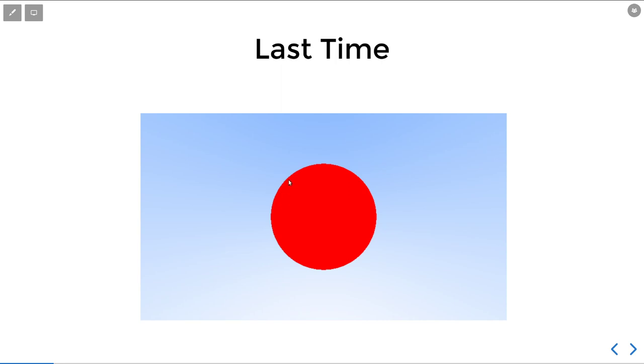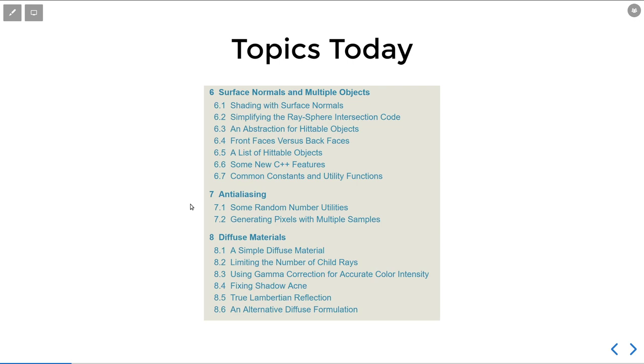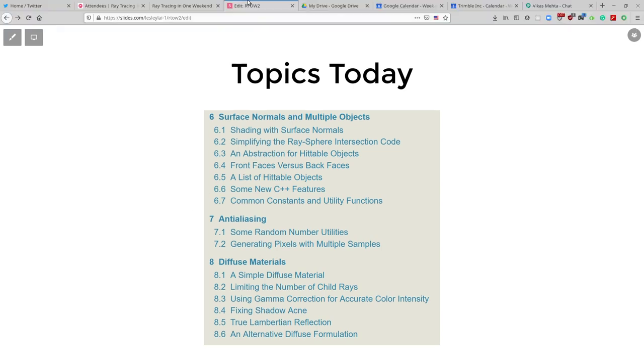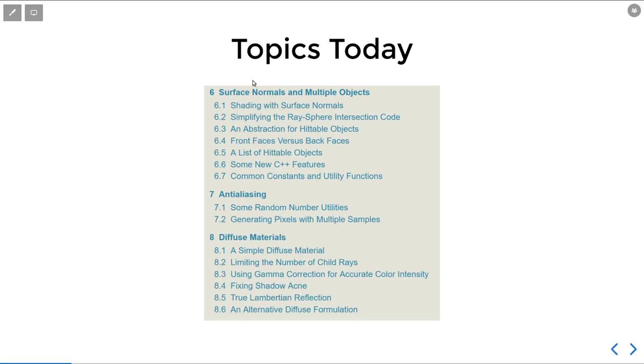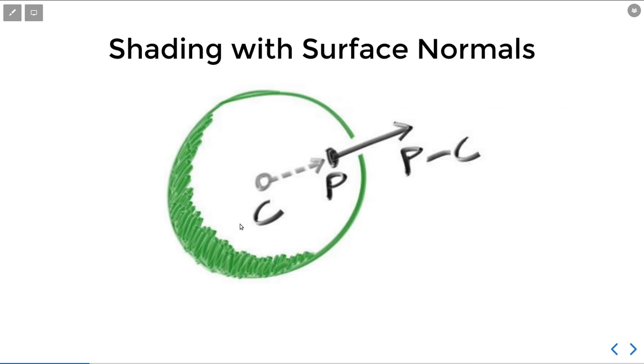We will address some of them today. We will have four main goals today: one is to implement surface normals, which is a prerequisite for all kinds of shading, and then we will extend our current hard-coded sphere into a scene that can handle multiple objects. Then we talk about anti-aliasing and finally diffuse materials.